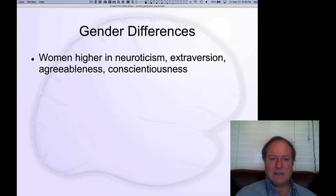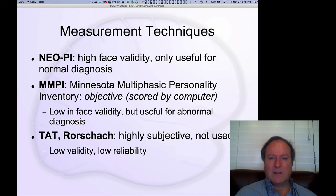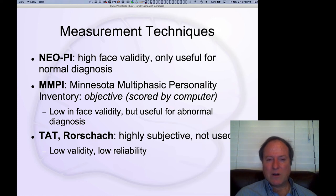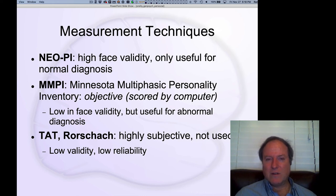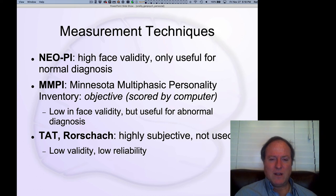Finally, we can think about the actual techniques used to measure personality variables. The most widely used one is something called the NEO-PI, the New Personality Inventory. It asks pretty straightforward questions that directly relate to the dimensions of interest, so it has high face validity — the questions make sense in terms of what the underlying constructs are. It's useful mainly for normal people in the normal range of personality variables. There's also the MMPI, which is more objective and can be scored by a computer. The questions are very strange, but statistically they correlate with these underlying personality variables.